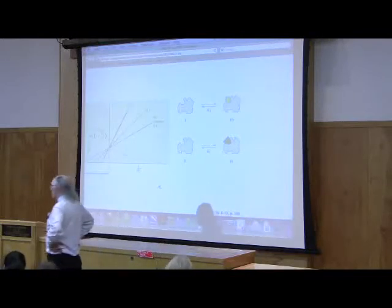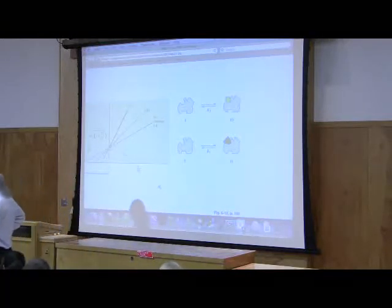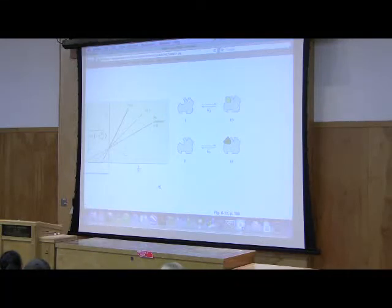Now, when I look at noncompetitive, what's going to happen? The Y-intercept is going to change, and what's going to happen to the X-intercept? It's going to be the same, right? The Y-intercept changes because Vmax is changing. Does the Y-intercept go up or down? How many say down? How many say up? If Vmax gets smaller, 1 over smaller must be larger. It goes up.